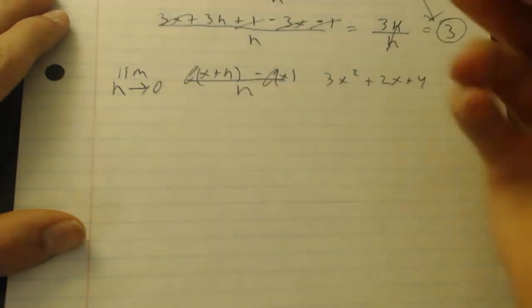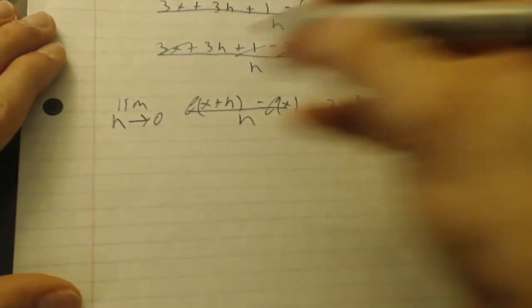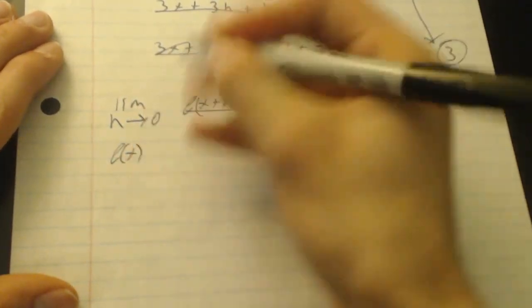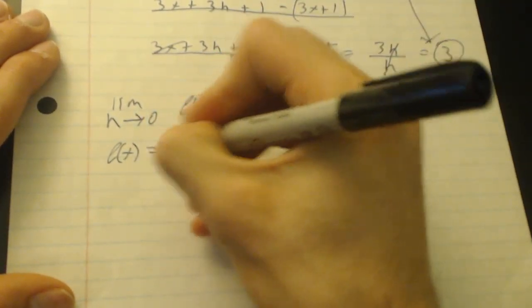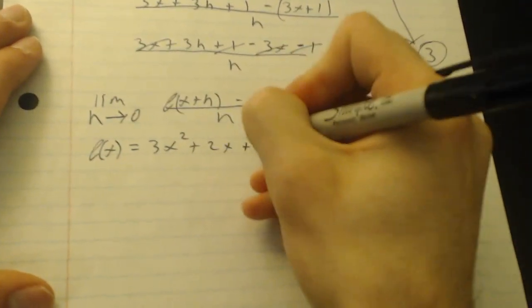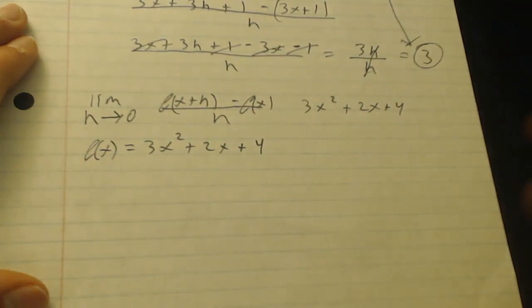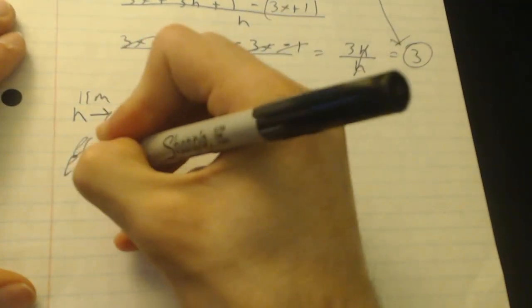Alright, so like in the last one, just break it up into steps. We already know what f of x is. f of x is equal to whatever the equation is, 3x squared plus 2x plus 4. Alright, so then we have f of x plus h.